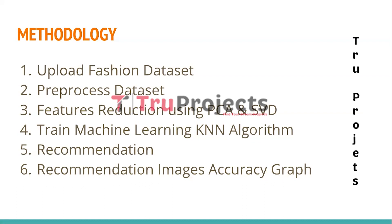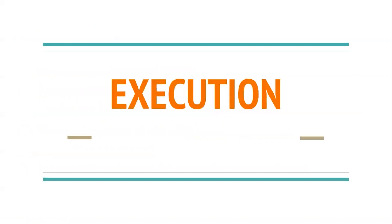The sixth module is Recommendation Images Accuracy Graph. In this module, the prediction accuracy of the top 10 recommended images is calculated and plotted on a graph. The accuracy graph provides insight into the performance of the recommendation system, allowing visualization of how accurate the recommended images are in terms of their similarity to the query image.